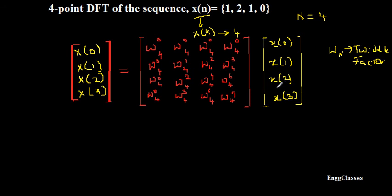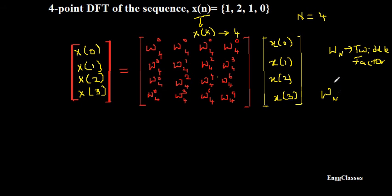Then I have W_4^1, W_4^2, W_4^3, and also W_4^2, W_4^4, W_4^6, and W_4^3, W_4^6, W_4^9. How do I find these values? I need not find them individually — using the property of periodicity I can replace them. I can rewrite the equation in terms of 0, 1, 2, 3. Because as this sequence is of length 4, values 0, 1, 2, 3 — everything greater than 3, such as 4, 6, 9 — can be rewritten in terms of 0, 1, 2, 3 by exploiting the periodicity property.